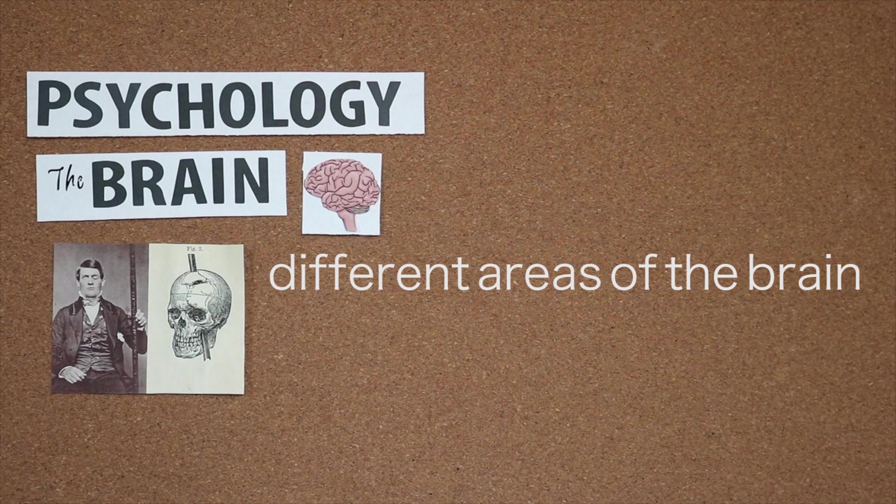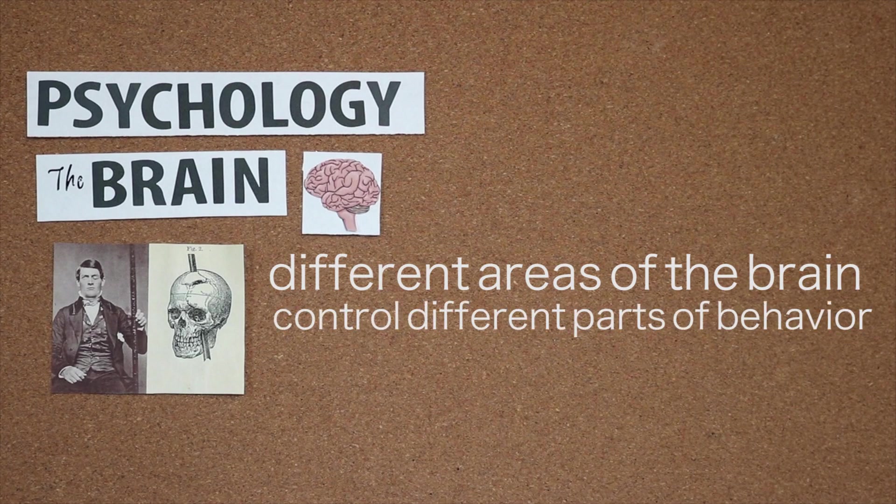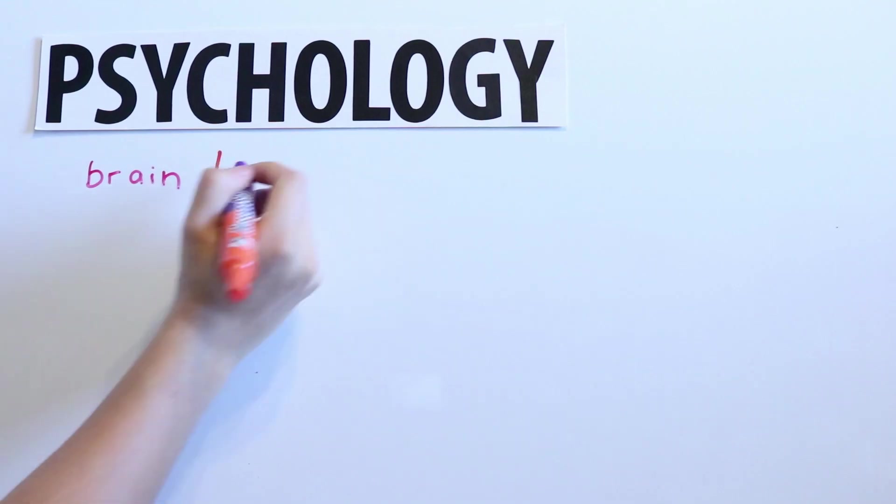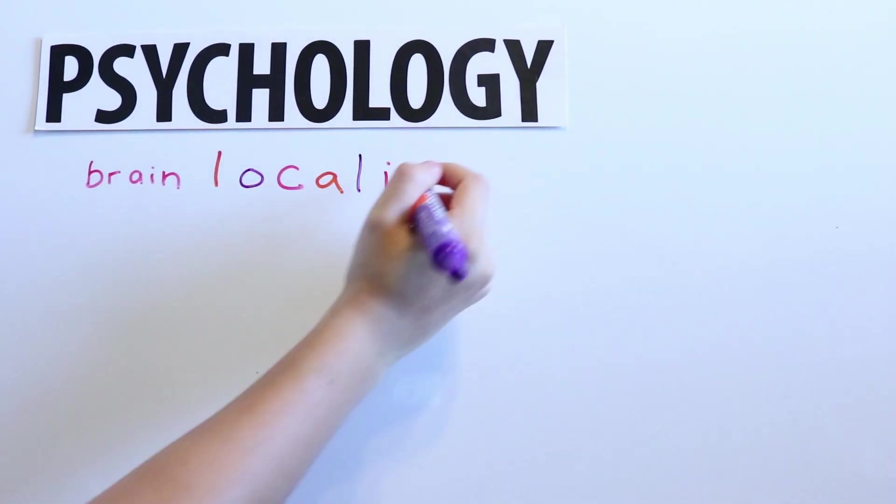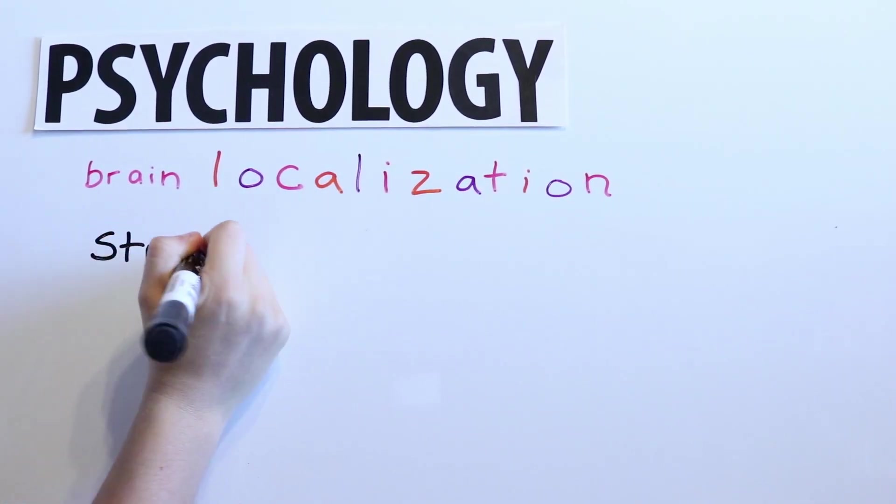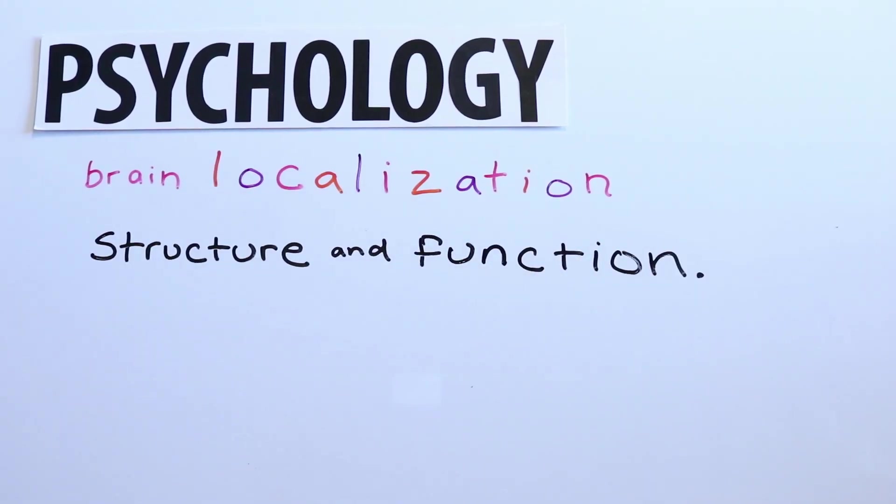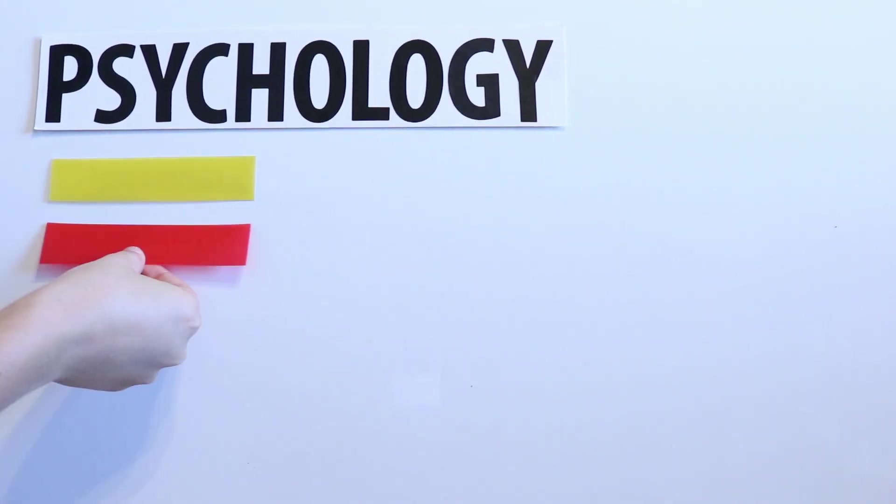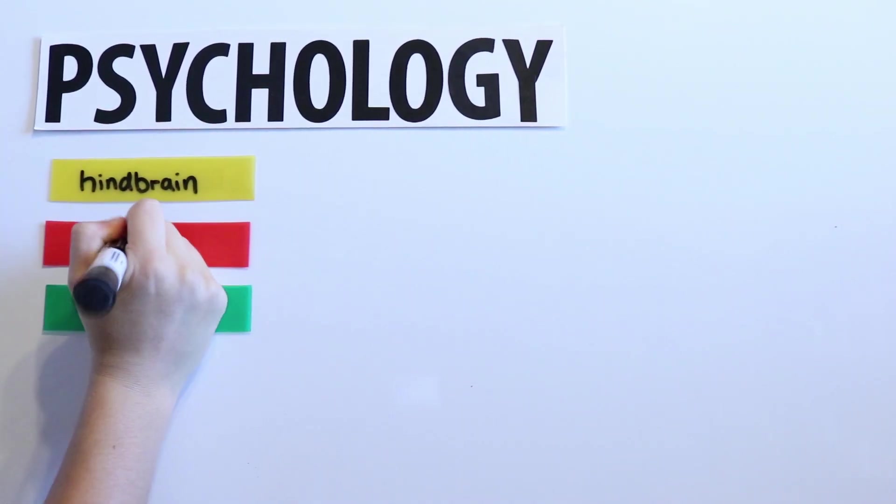The idea that different areas of the brain control different parts of behavior is called brain localization. And brain localization can help us divide the brain into separate categories so that we can study both its structure and function. There are three major parts of the brain, the hindbrain, midbrain, and forebrain, each of which serve different purposes.